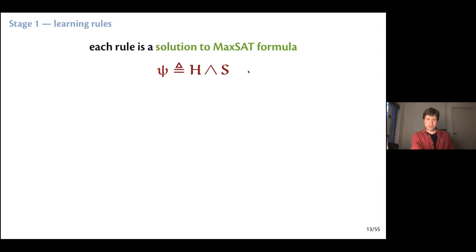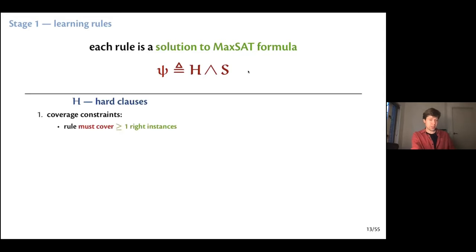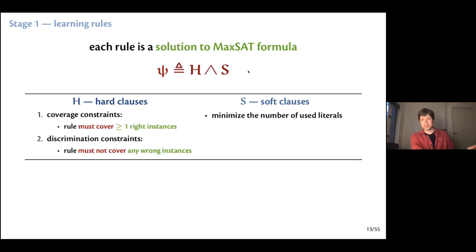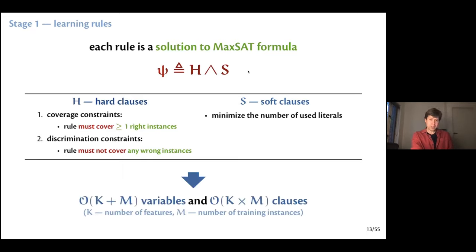In Stage 1 we use MaxSAT, with partial CNF formulas containing hard and soft clauses. The hard clauses are of two kinds: coverage constraints — each rule must cover at least one instance of the right class — and discrimination constraints — the rule must not cover any instances of the wrong class. The soft clauses provide the preference to minimize the number of used literals, which is how we minimize the rule size. This encoding is much smaller than what existed before because the problem itself is simpler. We have to solve it multiple times, but each individual solve is quite efficient.